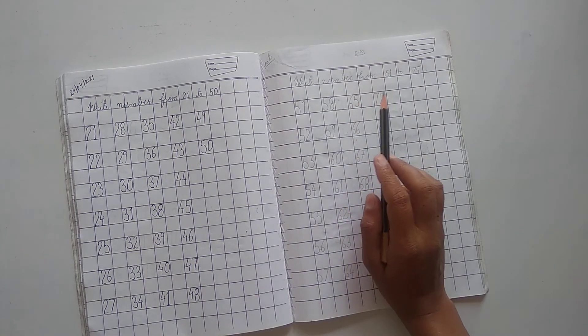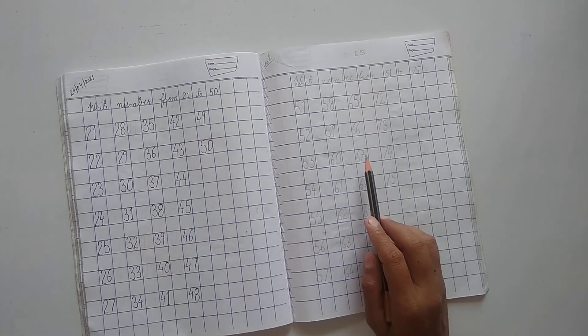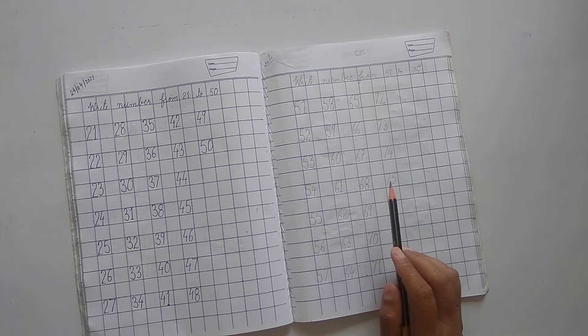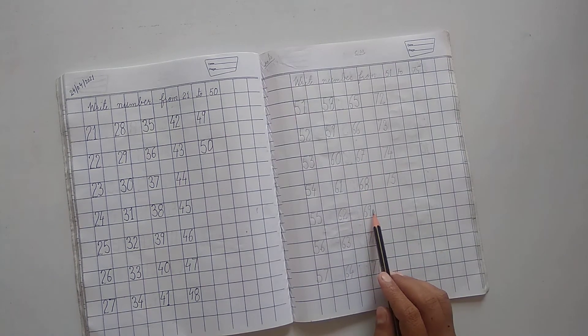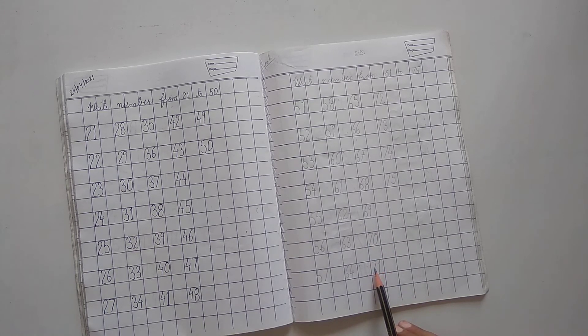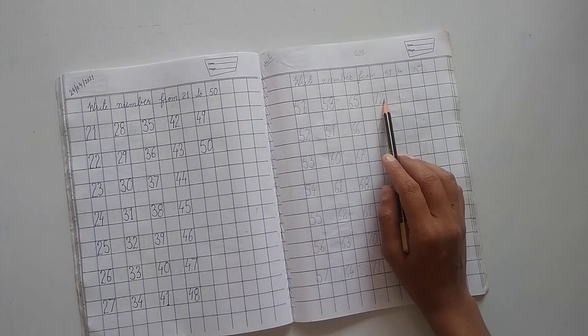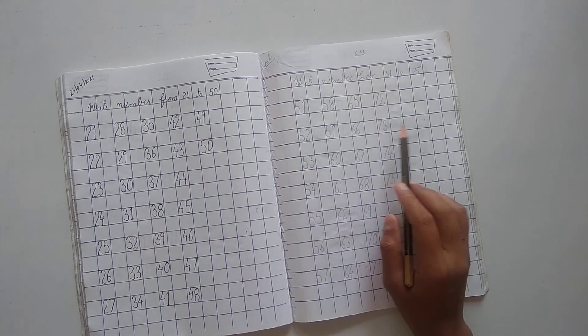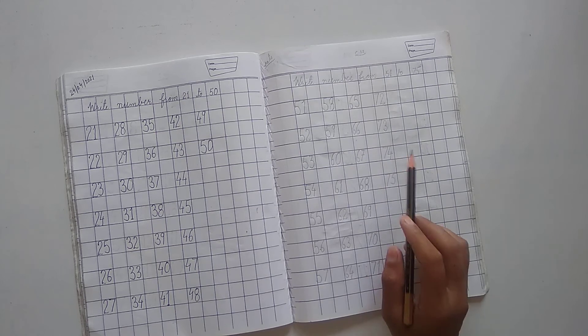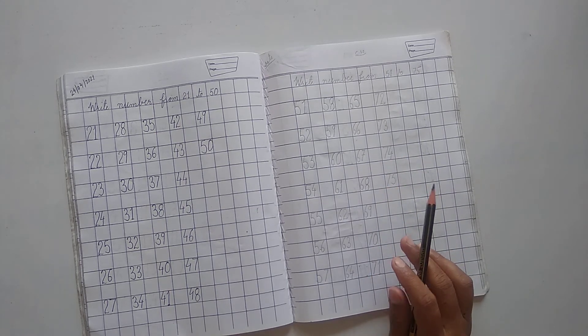65, 66, 67, 68, 69, 70. Next, 71, 72, 73, 74, 75. All right, okay.